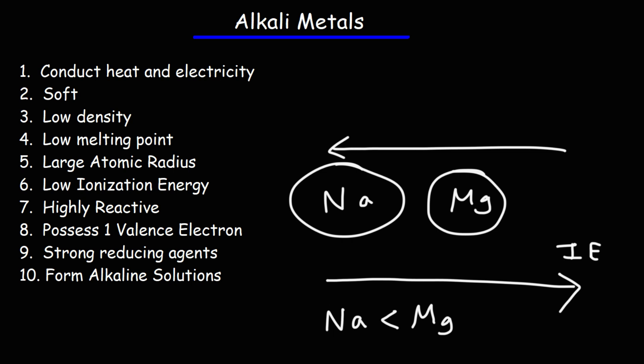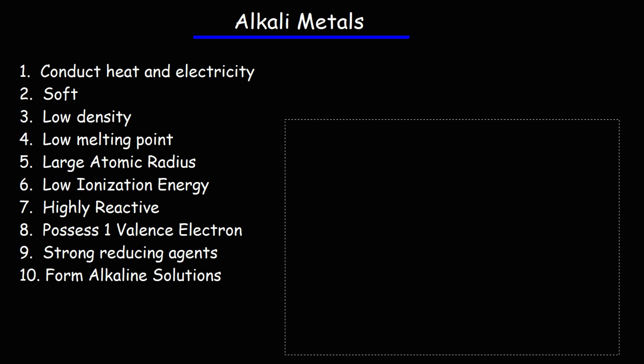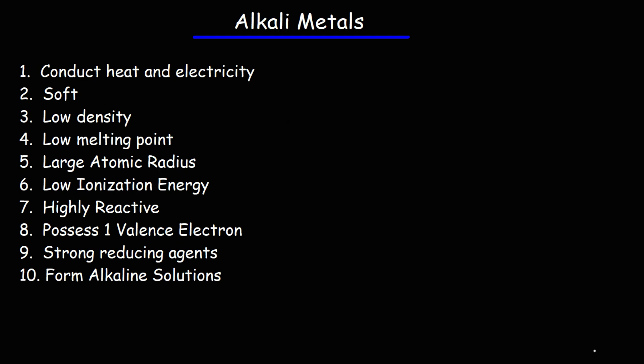Alkali metals are highly reactive. They can react with water, producing hydrogen gas, and at the same time they create hydroxides, so they form alkaline solutions. All alkali metals possess one valence electron, so they have a very low electronegativity — they're in fact electropositive, which makes them strong reducing agents. They really want to give up their valence electrons to have a complete octet. Lithium is one of the strongest reducing agents, with a standard reduction potential of negative 3.05 volts.